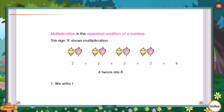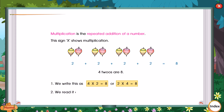We write this as 4 into 2 is equal to 8, or 2 into 4 is equal to 8. We read it as 4 multiplied by 2 gives 8.